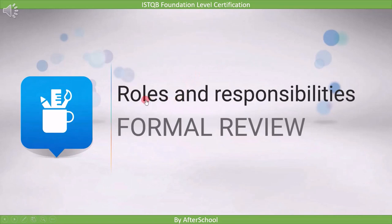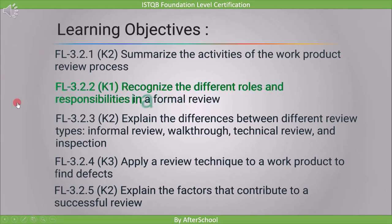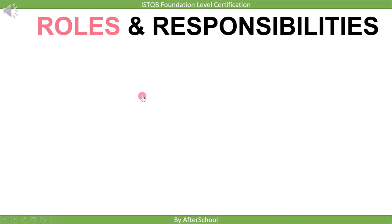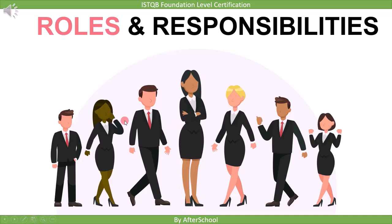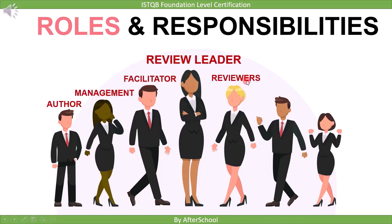In this lecture we discuss roles and responsibilities in a formal review, addressing the second learning objective marked as K1. The different roles in the review process are: author, management, facilitator, review leader, reviewer, and scribe (sometimes called recorder). The author creates the work product under review. Management is responsible for planning the review process. The facilitator runs the review meeting smoothly. The review leader is responsible for the overall review process. The reviewer reviews the work product to find defects. The scribe records the defects found by the reviewer.